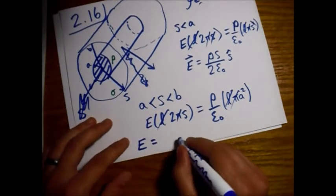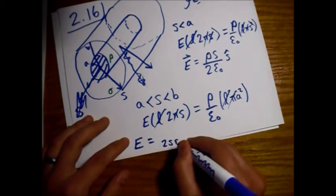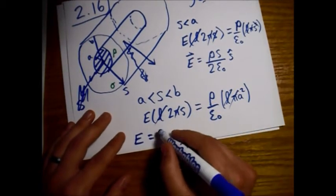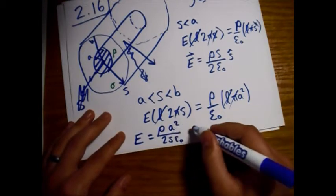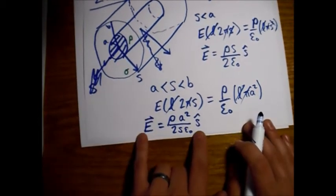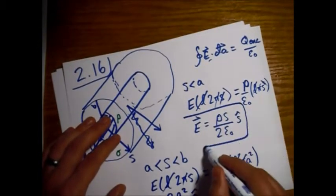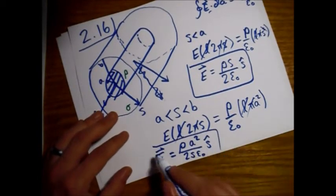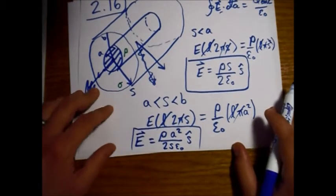E equals - now on the bottom we have 2 s epsilon naught, and on the top we still have a rho, and we have an a squared now. This is in the s hat direction, so now we have our full on vector.